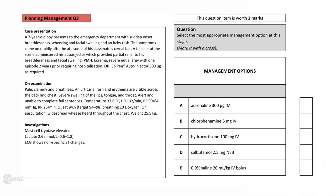However, they still remain, and on examination he is pale, clammy and breathless, with a rash across his back and chest. His lips, tongue and throat are still swollen, and he is breathless and unable to complete full sentences. His oxygen saturations are 94%, breathing 10 litres of oxygen. On auscultation, a widespread wheeze can be heard throughout the chest. His mast cell tryptase is elevated, as well as his lactate.